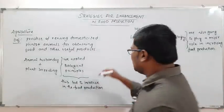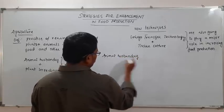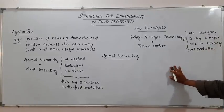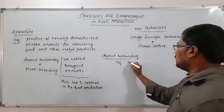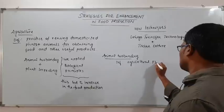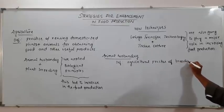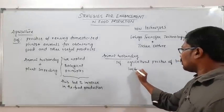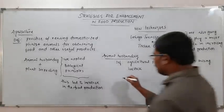First, I will be talking about animal husbandry in detail. What is animal husbandry? It is the agricultural practice of breeding and raising livestock. In simple terms, it is the care and breeding of livestock.